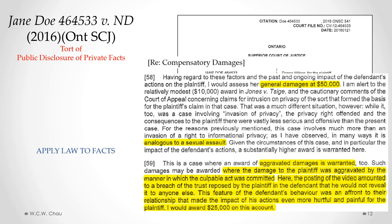The court then moved on to appropriate remedies. In determining compensatory damages, the court said that what the plaintiff suffered was analogous to a physical sexual assault. The court gave her general damages of $50,000 — much more than the $10,000 award in Jones and Tosig — because of the devastating impact on the plaintiff, which was akin to a sexual assault. The court also awarded aggravated damages of $25,000 because the posting amounted to a breach of trust, as the defendant had promised the plaintiff he would not show the video to anyone else.